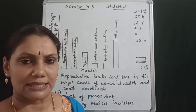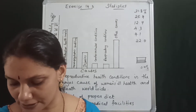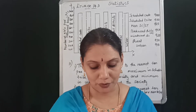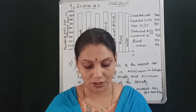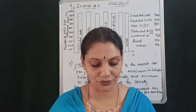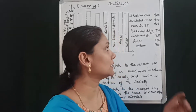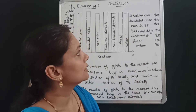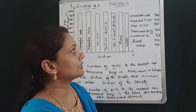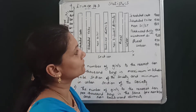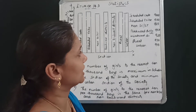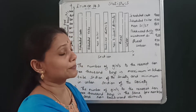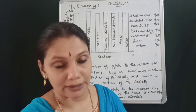The following data on the number of girls to the nearest ten per thousand boys in different sections of Indian society is given below: Scheduled Caste 940, Scheduled Tribe 970, Non-SC/ST 920, Backward Districts 950, Non-Backward Districts 920, Rural 930, Urban 910.